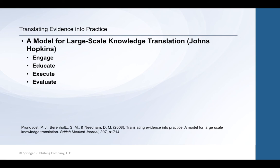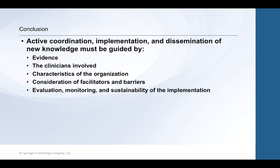Here's the John Hopkins model. One of the things to keep in mind with all of these models is that the main function of any dissemination model or translational research model is to provide a structured process or system.